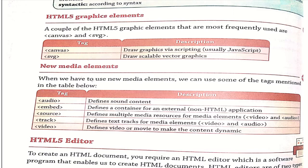New media elements are introduced in HTML5. The audio tag is used to define sound content. The embed tag is used to define a container for an external application — to use an external web page or link anything, we use the embed tag. The source tag is used to define multiple media sources for elements like video or audio. The track tag defines text track for media elements. The video tag defines a video or movie to make content dynamic.